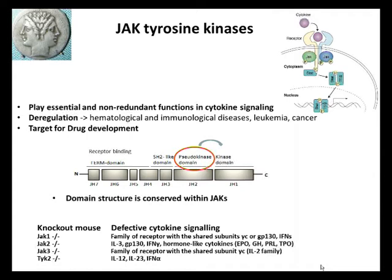The deregulation of JAK kinases has increasingly been shown to be involved in different hematological as well as immunological diseases, leukemia, and cancer. Subsequently, JAK kinases have become a major target for drug development. The first two inhibitors were approved last year: Ruxolitinib for myelofibrosis and Tofacitinib for rheumatoid arthritis.